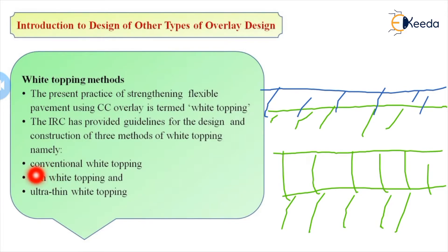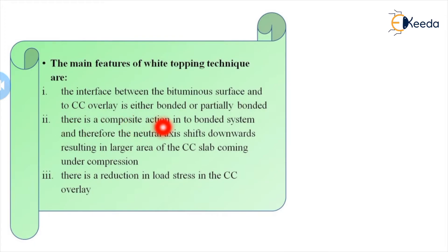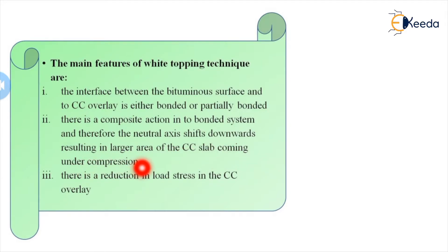Mostly we use thin white topping. The main feature of white topping techniques is that the interface between the bituminous surface and the CC overlay is either bonded or partially bonded. There is composite action in the bonded system, and therefore the neutral axis shifts downwards, resulting in a large area of the CC slab coming under compression. Since concrete is designed for compression, there is a reduction in load stress in the CC overlay.